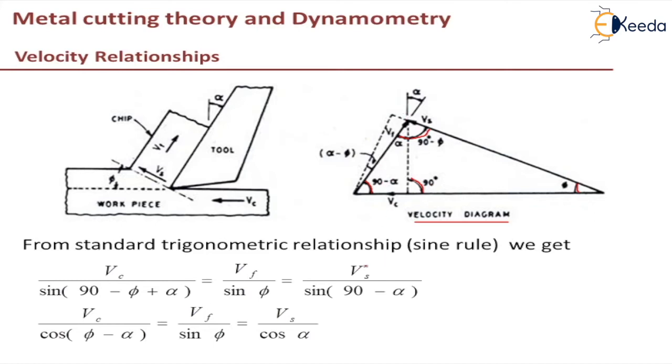So if we apply sine rule for this, so I can write Vc by opposite of this angle is this that is alpha plus 90 minus phi. So that will be equal to Vc by sine 90 minus phi plus alpha will be equal to Vf.